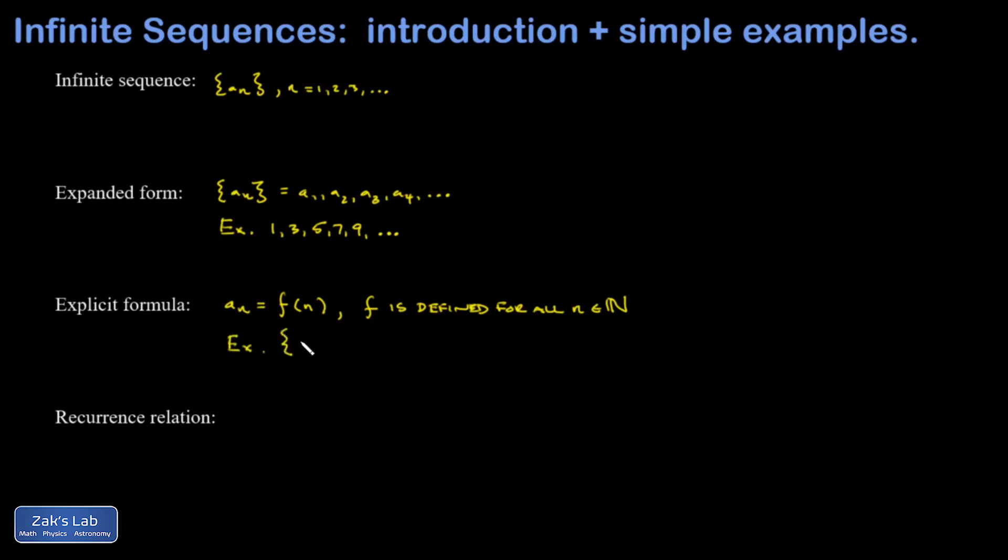And an example of this: I could write inside the braces that my a_n's are generated by the formula 2n minus 1. So that's the function f(n) = 2n - 1. If you then want to look at this in expanded form, you could sub in n equals one, n equals two, and so on. So when I put in n equals one, I get two times one minus one, that's just one. Put in n equals two and I get two times two, that's four, minus one, giving me three. Put in n equals three, I get six minus one, that's five. Aha! I recognize the pattern. We're really talking about the same sequence we were talking about in the last example.